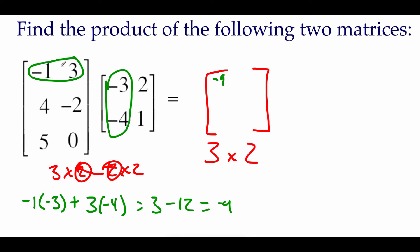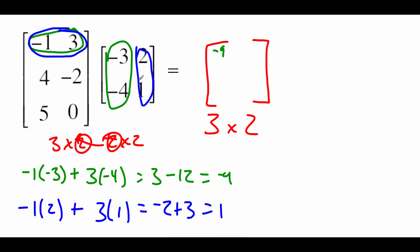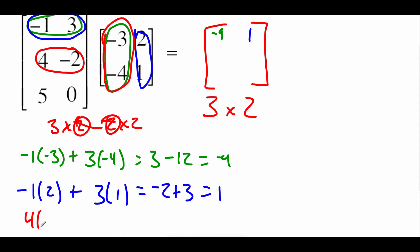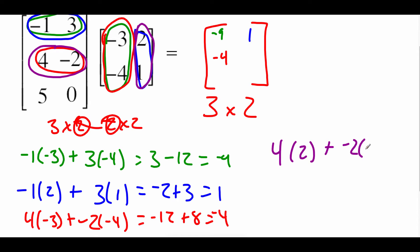Now first row times second column: negative one times two, plus three times one gives us negative two plus three, which is one — that fills into first row, second column. Moving on to second row times first column: four times negative three plus negative two times negative four. Four times negative three is negative twelve, and negative two times negative four is eight, so we get negative four. Then second row times second column: four times two plus negative two times one. Eight plus negative two is six.